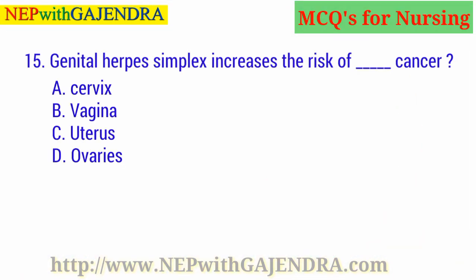Genital herpes simplex increases the risk of which cancer? A. Cervix. B. Vagina. C. Uterus. D. Ovaries. The right answer is A: Cervix.